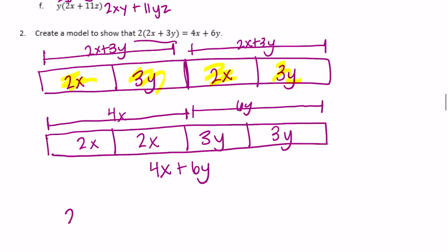So this is equal to 4x plus 6y. So in the end this proves that 2 times (2x + 3y) is equal to the second model of 4x + 6y.